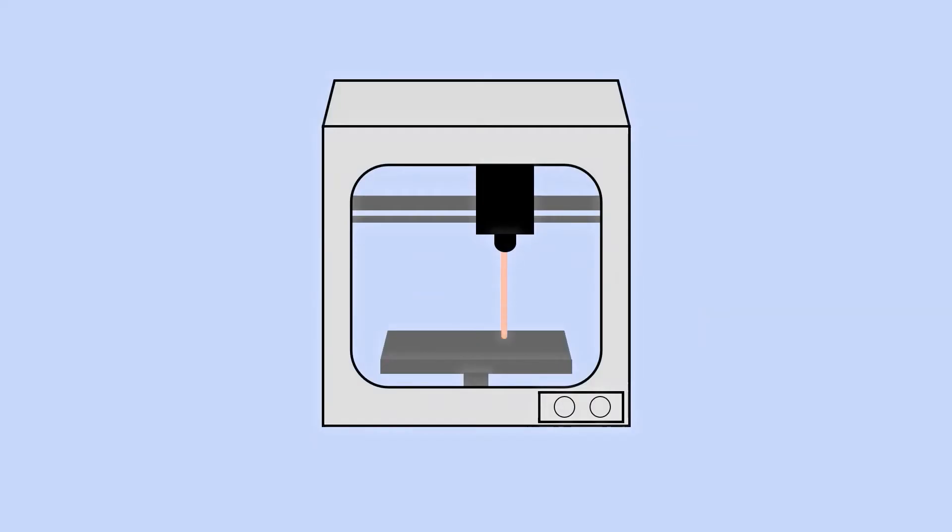3D bioprinting is just like normal 3D printing, except it uses living cells as ink to create living structures. Like 3D printing, you have to create a model on a computer, then layer by layer, your living structure will be printed.